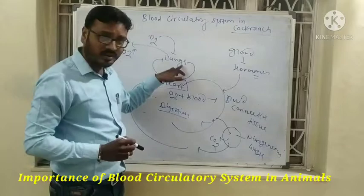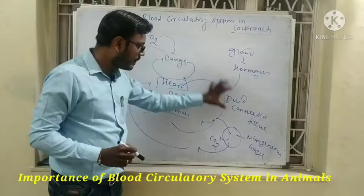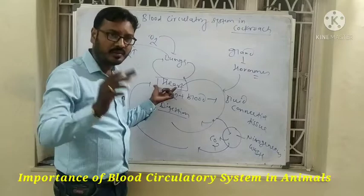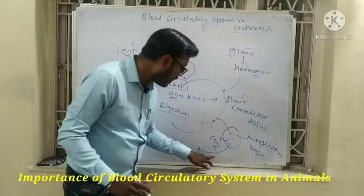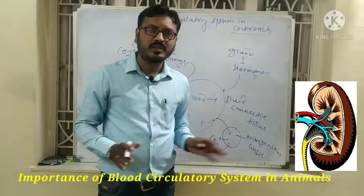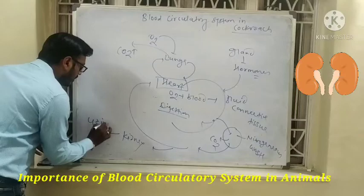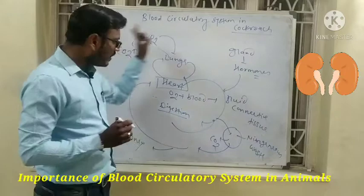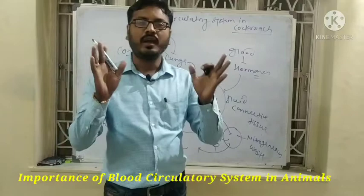So: inhalation brings oxygen in, exhalation expels carbon dioxide, and the heart's pumping activity is the vital mechanism. Nitrogenous waste, after mixing with the blood, is carried to the kidneys. The kidney carries out the removal of nitrogenous waste from the blood, and via urine this waste is removed from the body. This indicates the importance of the blood circulatory system in animals.